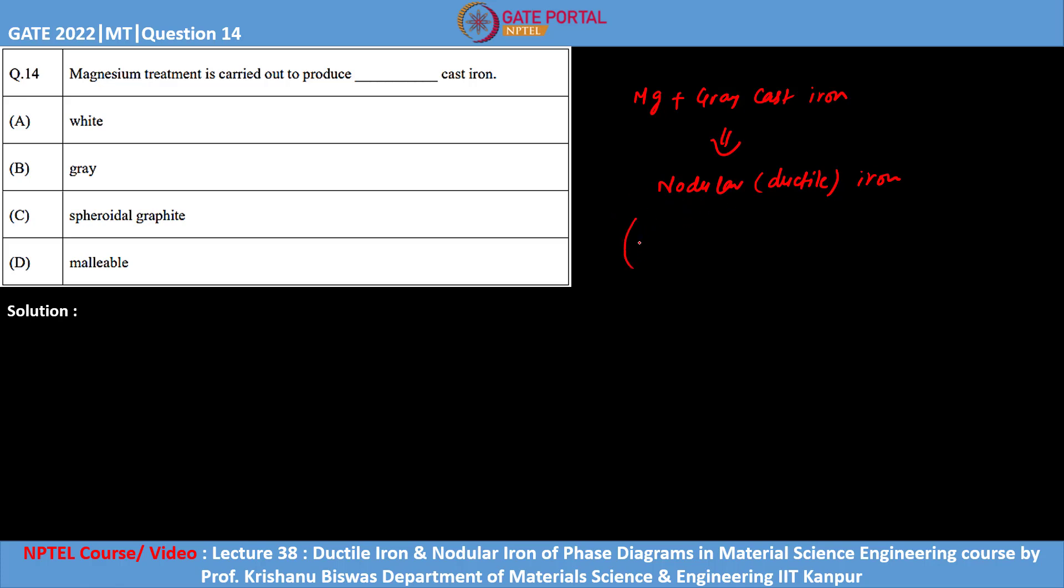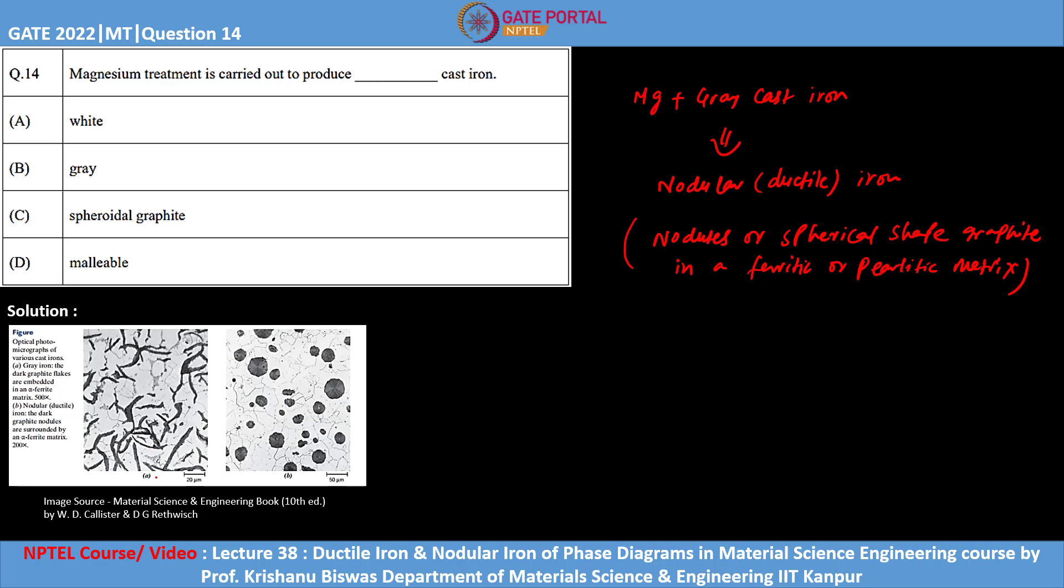If you see the nodular or ductile iron, the microstructure of this type of cast iron will be having nodules or spherical shape graphite in a ferritic or pearlitic matrix.